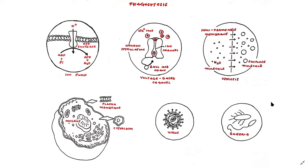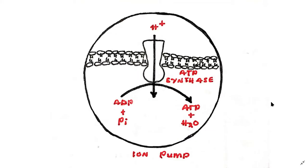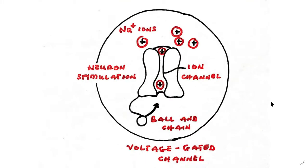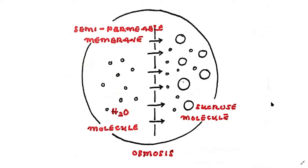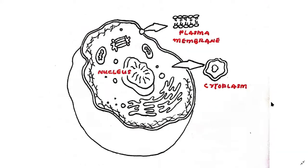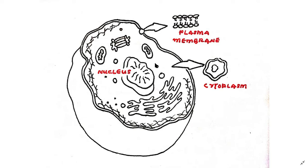Some cells can use various methods such as ion pumps, voltage-gated channels, or even osmosis to pull smaller molecules and chemicals across the plasma membrane and into their cytoplasm.